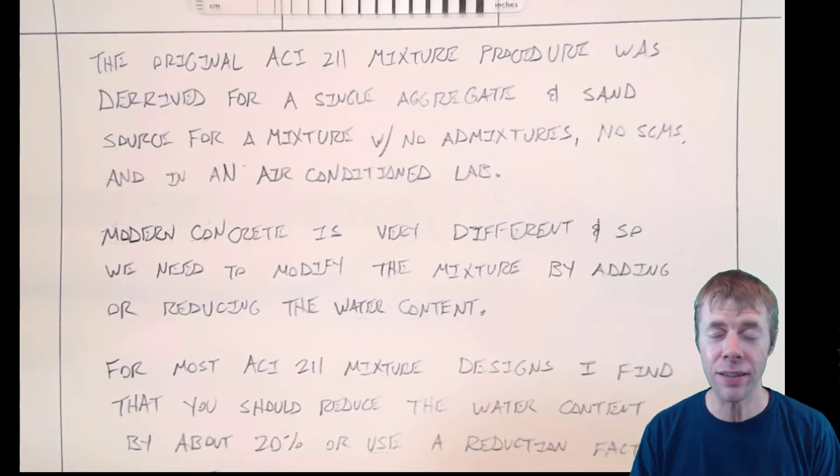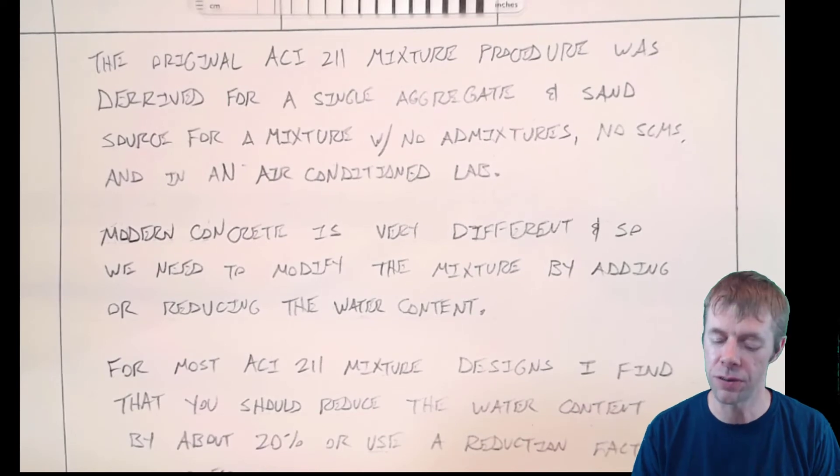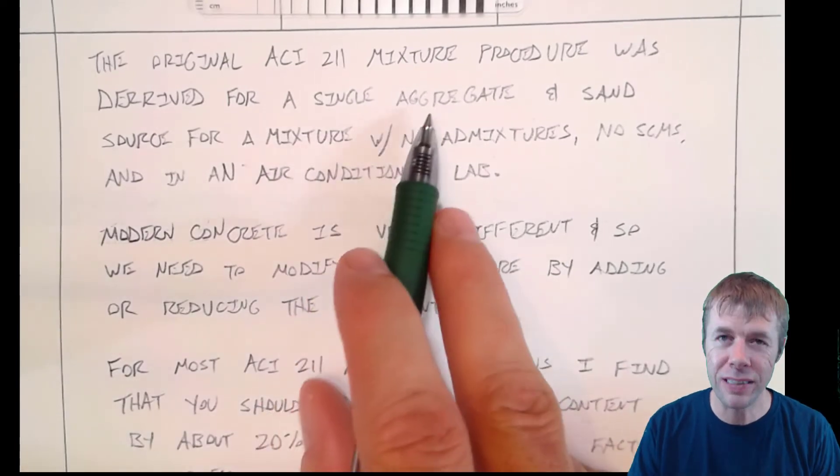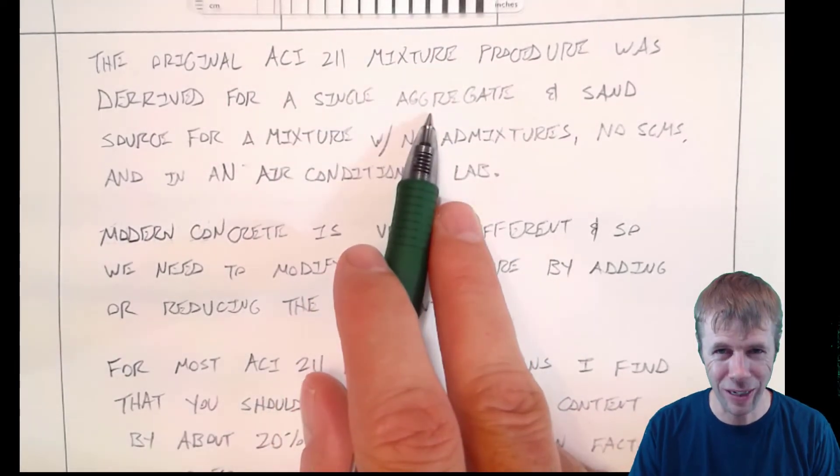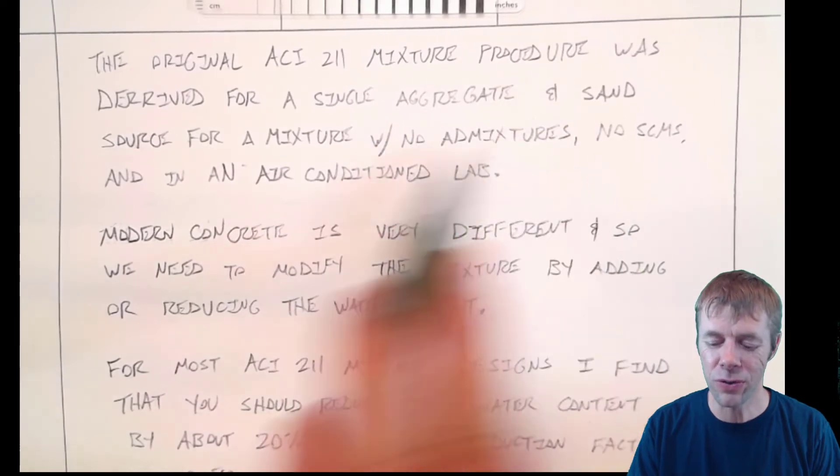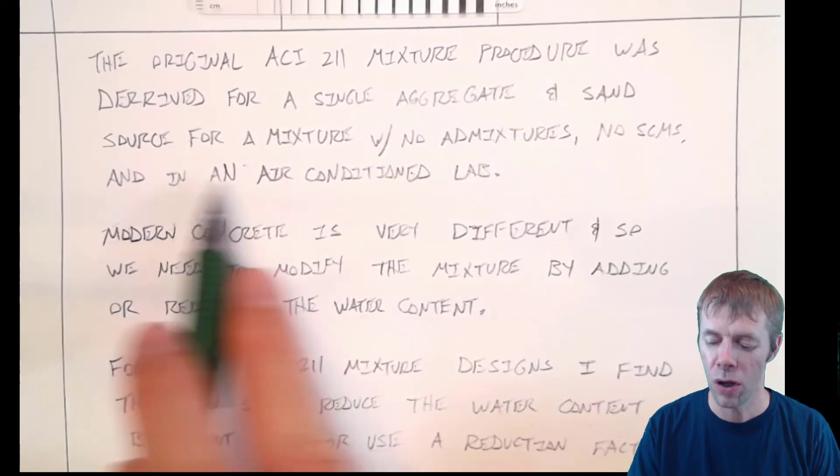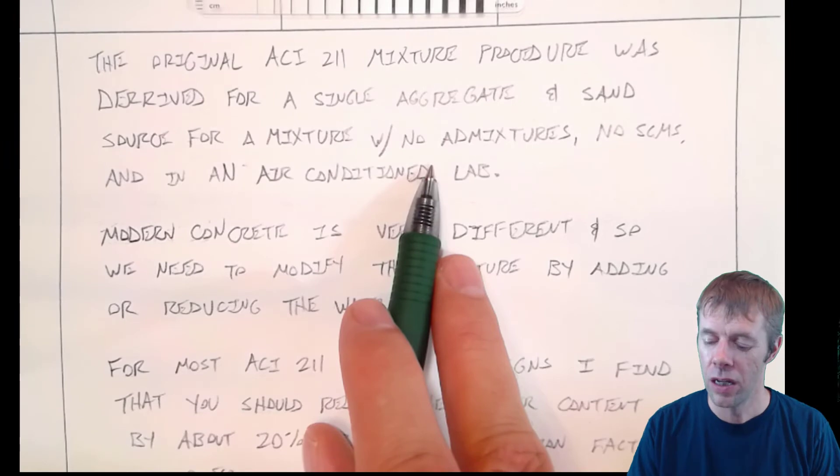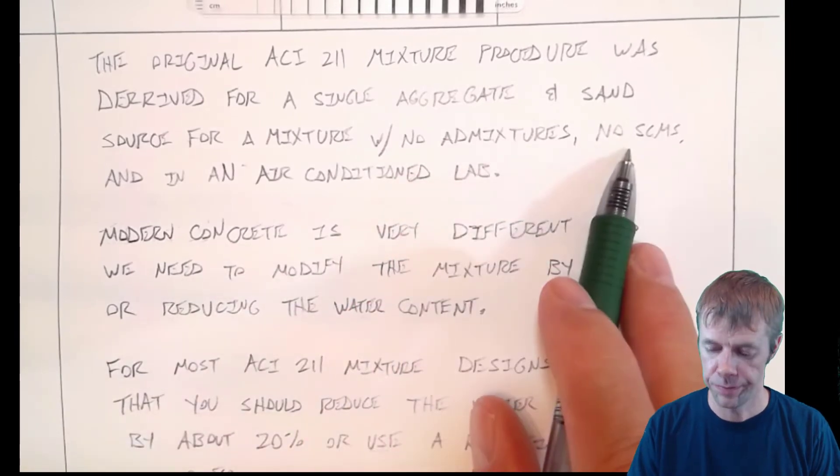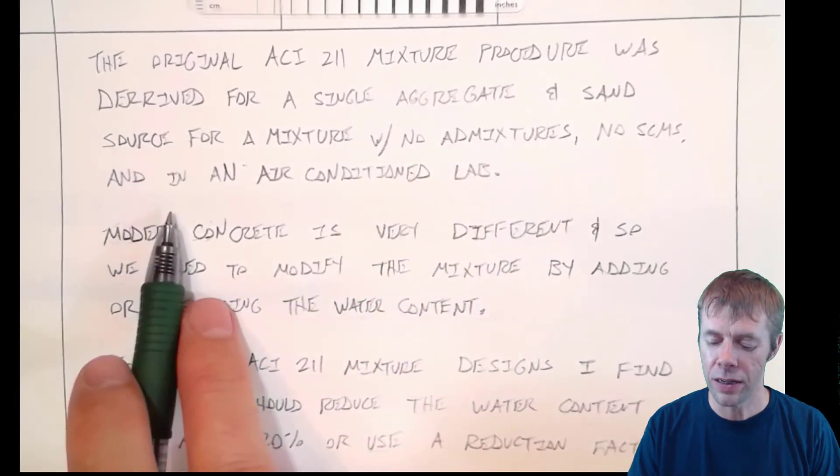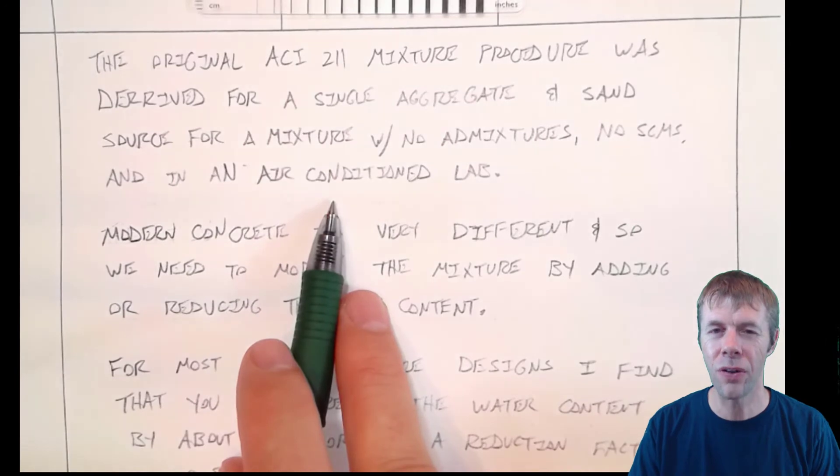So again I don't want to totally say this is incorrect because I think there's some science here. I think there's some truth here but it's not quite as easy as ACI-211 makes it out to be. The original ACI-211 mixture procedure was actually derived with lots and lots of mixes but they derived them for a single aggregate source. Isn't that crazy? And a single sand source with no admixtures in it, no SCMs,